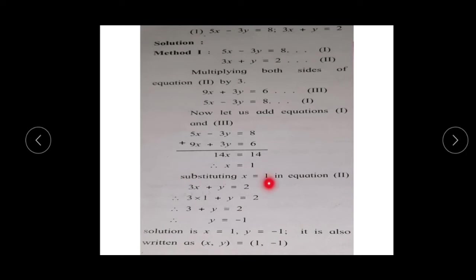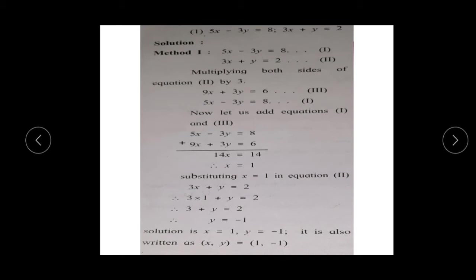Substituting x = 1 in equation number 2: 3x + y = 2 gives 3(1) + y = 2. Transferring 3 to the right side gives y = 2 - 3 = -1. Therefore, the solution is x = 1 and y = -1, which can also be written as (x, y) = (1, -1).